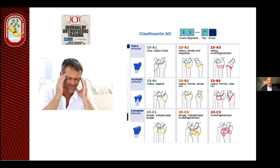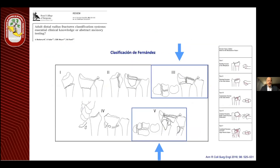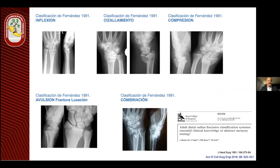Siempre ha sido un dolor de cabeza saber cuál clasificación utilizar. Existen diferentes, como la clasificación AO. Para nuestro grupo, lo que nos facilita más es la clasificación de Fernández, que es muy simple y nos puede orientar en un pronóstico funcional para el paciente y cómo vamos a tratarla. Desde fracturas por inflexión, las de cizallamiento, tipo 3 por compresión, tipo 4 con avulsión y fractura de luxación, y tipo 5 que es una lesión combinada.